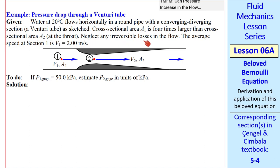We're going to neglect any irreversible losses. And suppose we know that V1 is 2 meters per second. We also measure the gauge pressure at 1. Now I want to estimate the gauge pressure at 2.